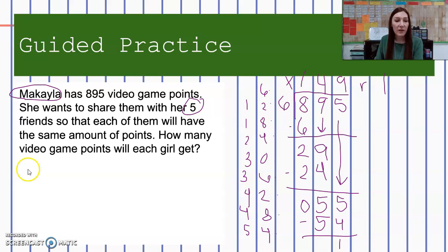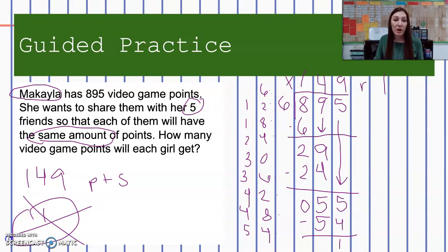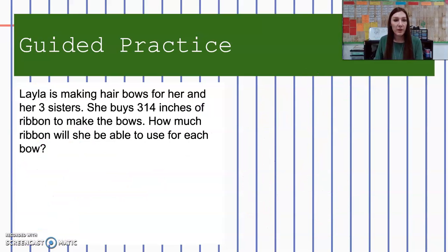This means that every girl will get 149 points and then I have one leftover. Is it fair if I give this one point to one person if Makayla wants all of them to have the same amount of points? Because that means one person will have more. It's not fair. So with our remainder, this time we're going to drop it. We are not going to include it in our answer at all. So every girl will get 149 points and the remaining points will be ignored.